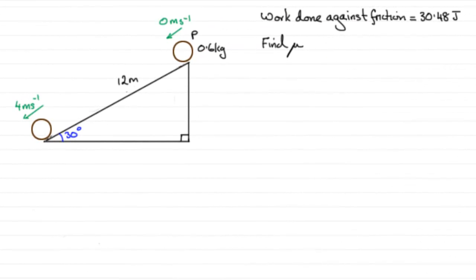Now this last part of the question, we're told that we've got to find the coefficient of friction, which is μ, between the particle and the plane. To do a problem like this, we know that the work done against friction we worked out in the previous part was 30.48 joules, and it's this that we're going to use in order to find μ.